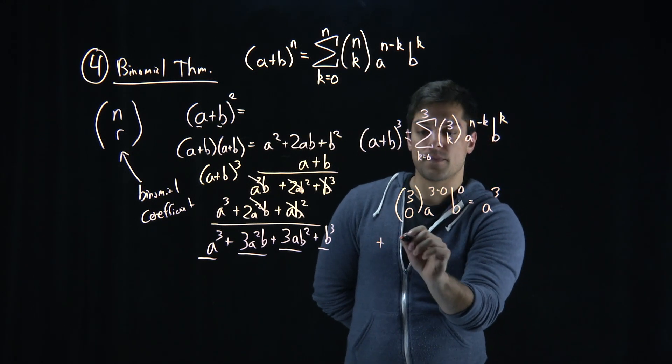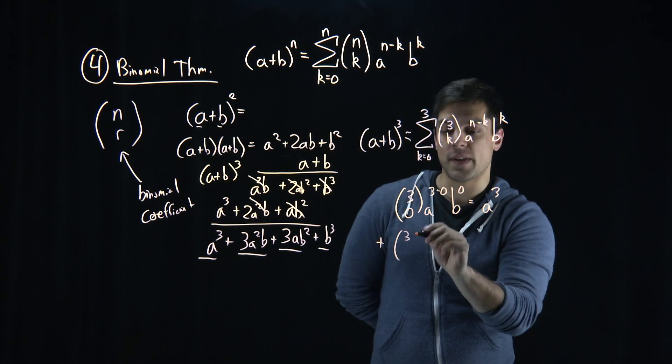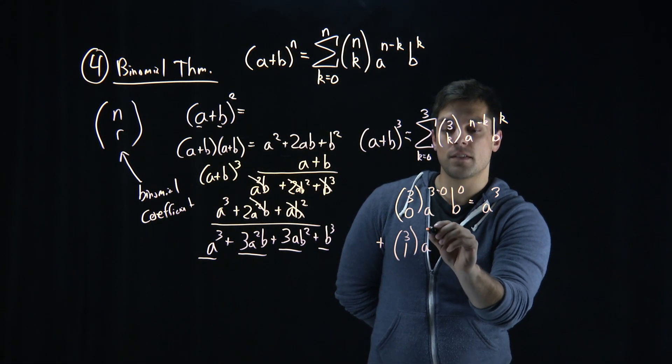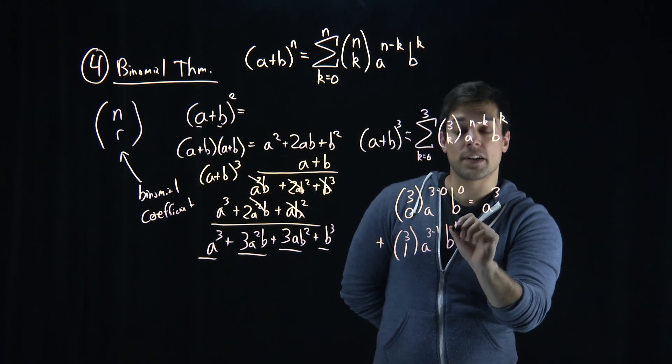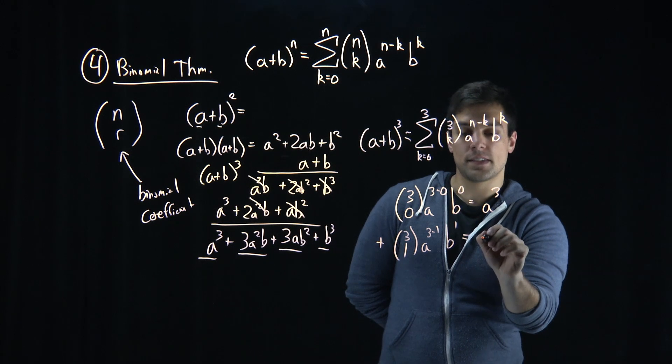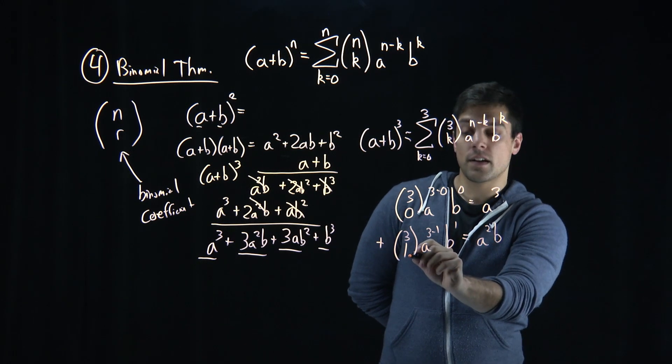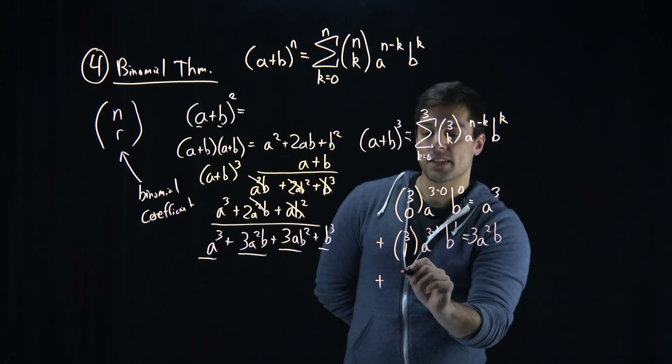Then if we add in our second term, 3, k increments, remember this is a summation, choosing 1, a to the 3 minus 1, b to whatever k is, 1 now. And this equals a squared b plus our 3 choose 1, which is 3. And let's continue on.